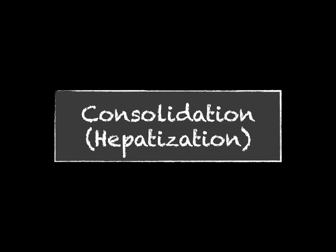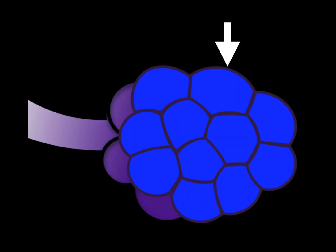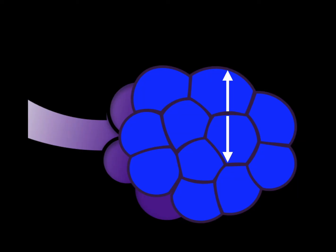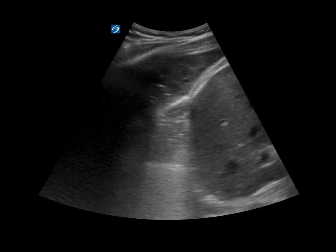Now let's talk about consolidation. On chest x-ray, consolidation appears as a white-out of that area or a solid-appearing lung, and we see the same thing on lung ultrasound. We think of those air sacs being filled completely with water. The ultrasound beam encounters them, some returns to create an image, and the rest continues on without scattering or becoming disorganized — traveling in a straight manner — giving us a solid-appearing organ.